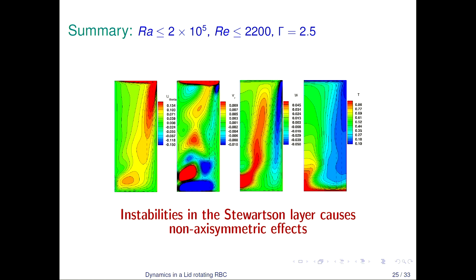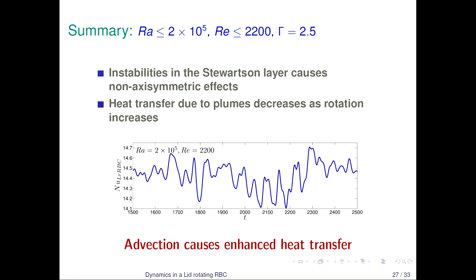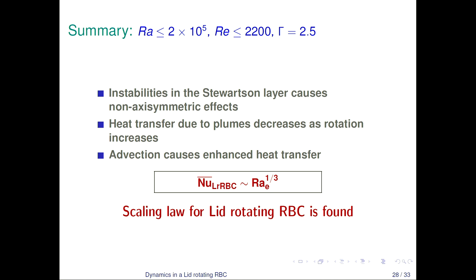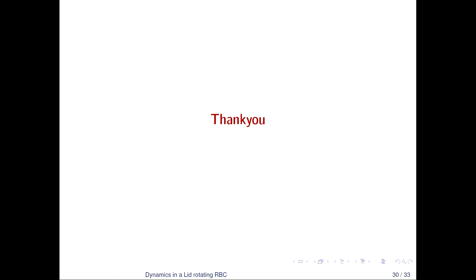In conclusion: there are instabilities in the Stewartson layer which break the axisymmetry of the system. Heat transfer by plumes is reduced as rotation increases. The advection in such a complex flow field is responsible for the enhanced heat transfer when rotating. Finally, we found a new scaling law for lid-rotating RBC with an exponent near one-third. We are still waiting for experiments to validate our results. Thank you for your attention.